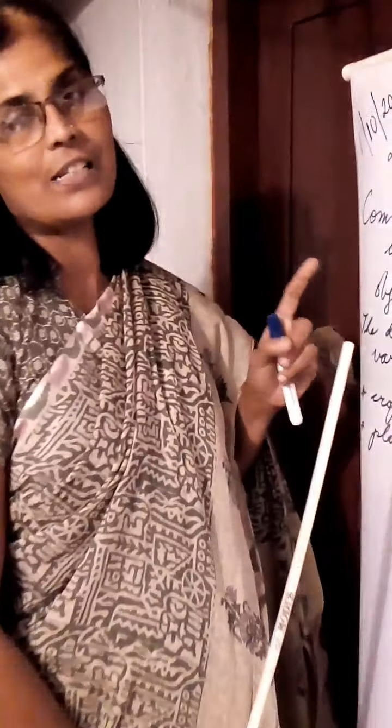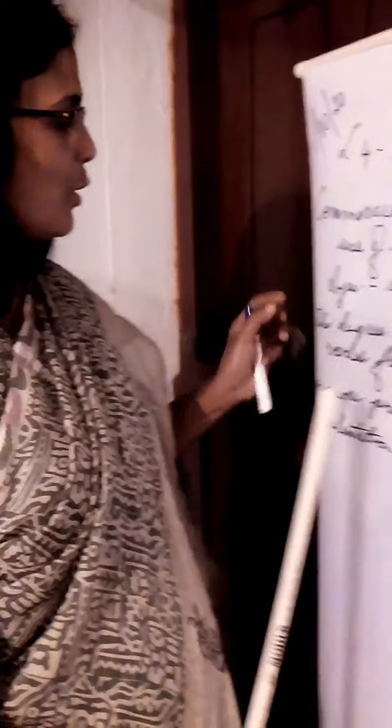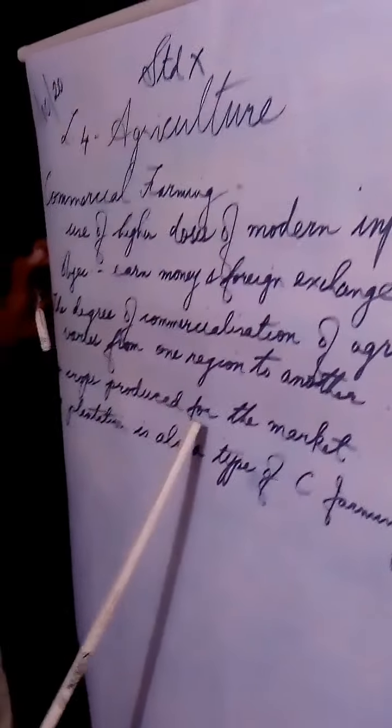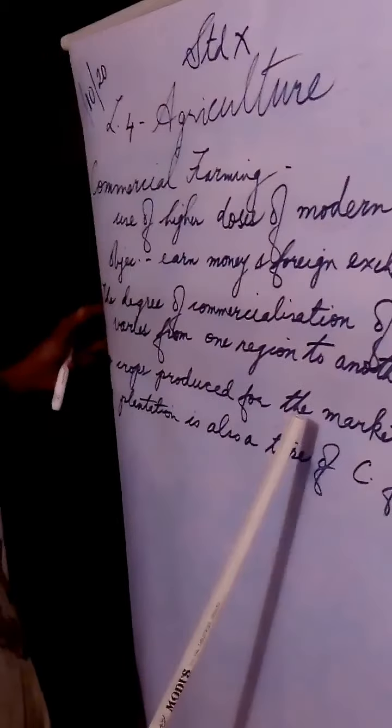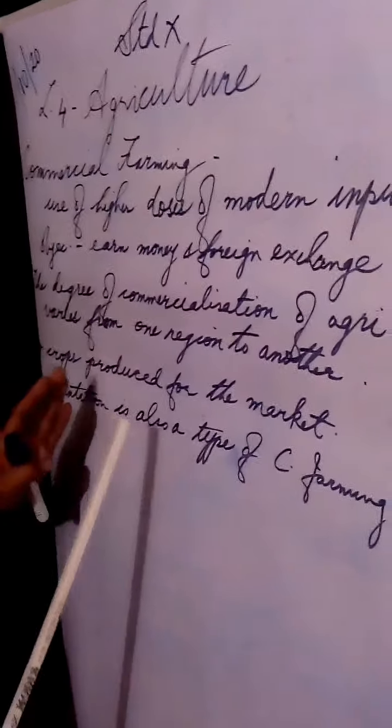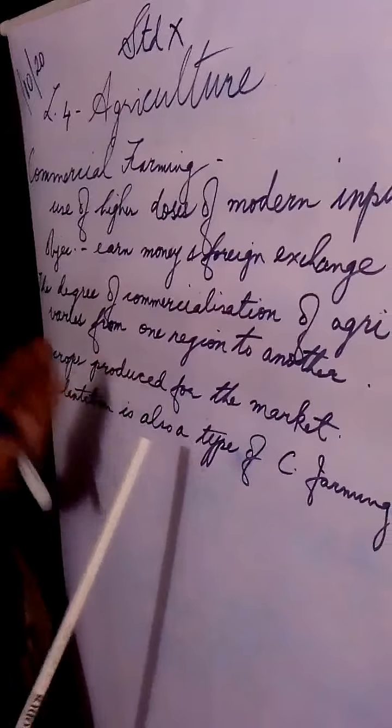In Punjab and Haryana, the cultivation of rice is considered a commercial crop — crops in commercial farming are done with the intention of selling in the market. In the next module, I will be telling you about plantation agriculture.